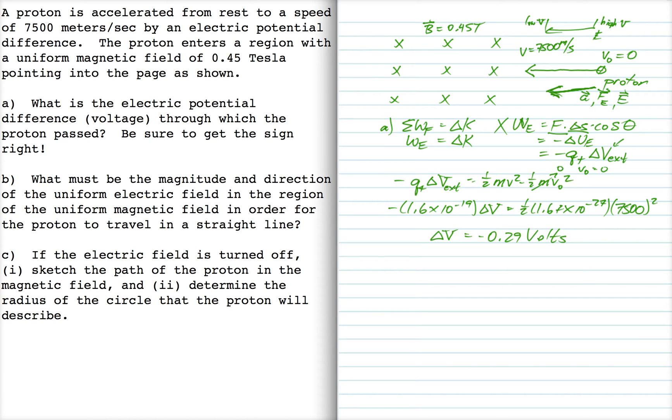So if we do delta V, which is final minus initial, we expect it to be negative in this case. The proton is going to move to a lower potential. So that finishes part A.